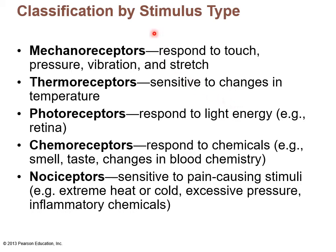Classifying by stimulus type: mechanoreceptors respond to touch, pressure, vibration, and stretch; thermoreceptors are sensitive to changes in temperature; photoreceptors respond to light energy; chemoreceptors respond to chemicals dissolved in aqueous solution — smell and taste are chemoreceptors. Nociceptors are pain receptors, and extreme hot, cold, pressure, and inflammatory chemicals can stimulate that pathway.